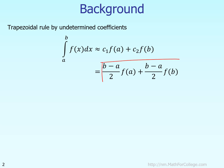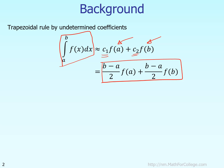We already know the trapezoidal rule. Using the method of undetermined coefficients, we say that the integral is approximately calculated by taking the function value at A multiplied by some coefficient C1, plus the function value at B multiplied by some coefficient C2, also called a weight. So C1 and C2 are the weights and A and B are the quadrature points.